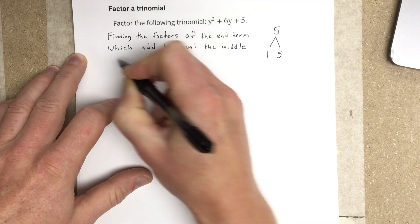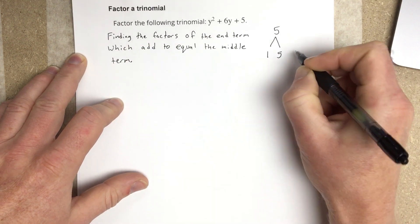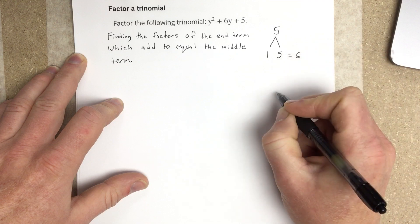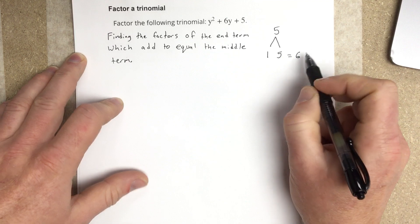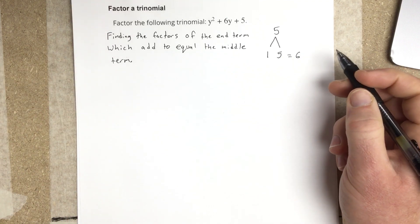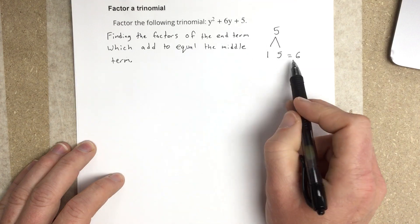So as you can see here, the factors 1 and 5, when you add those together, they would equal 6. So it's 1 times 5 gives you 5, but 1 plus 5 gives you 6. So that was our goal is to find the factors that would add to the middle term.